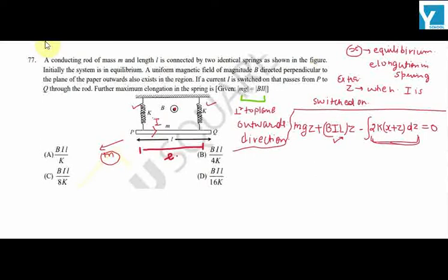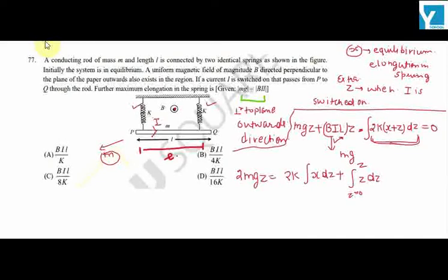We are also given that magnitude of ILB is equal to mg, so we will get 2mgz equals 2k times integration of (x dz + z dz). This implies 2mgz equals 2k times (xz + z²/2), with the whole term in brackets.